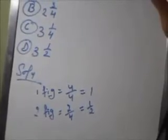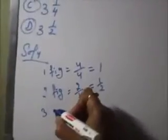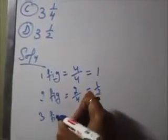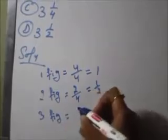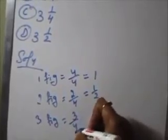For the third figure, there are 4 sections — 1, 2, 3, 4 — but only 3 sections are shaded. So for the third figure, this is 3 by 4.